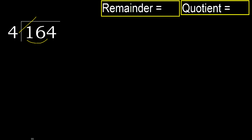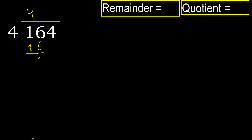But not greater. 4 multiply by 5 is 20 — 20 is greater. 4 multiply by 4 is 16. 16 is not greater. Subtract 0.